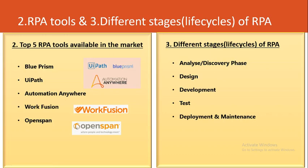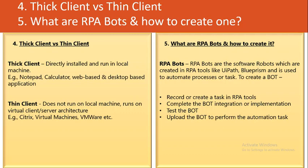For question number three, what are the different stages of RPA? The five main phases are: analyze or discovery phase, design phase, development phase, test phase, and deployment or production or maintenance phase. The analyze phase is where you discover whether a project can be automated. The design phase is where you build the process design document or solution design document. Development is where you build the bot, testing is where you verify it works, and deployment is where you move it to production.